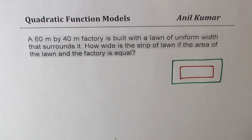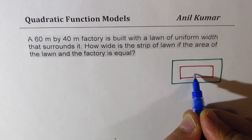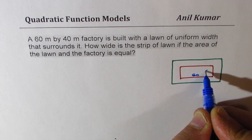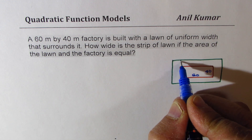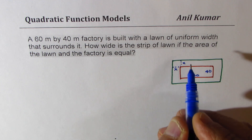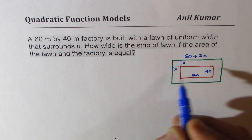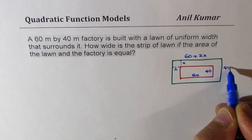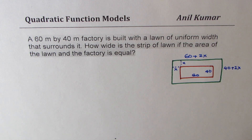So what we are given here is that the 60 by 40 meter factory — that means this length is 60 and the width is 40 — is surrounded by a lawn of uniform width. We can assume the width to be x units. In that case, the length will be 60 plus 2x and the width will be 40 plus 2x. So that becomes the length and the width for our plot.